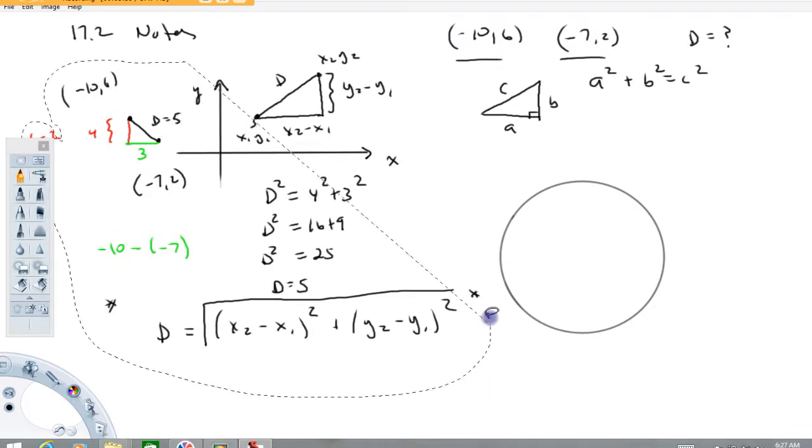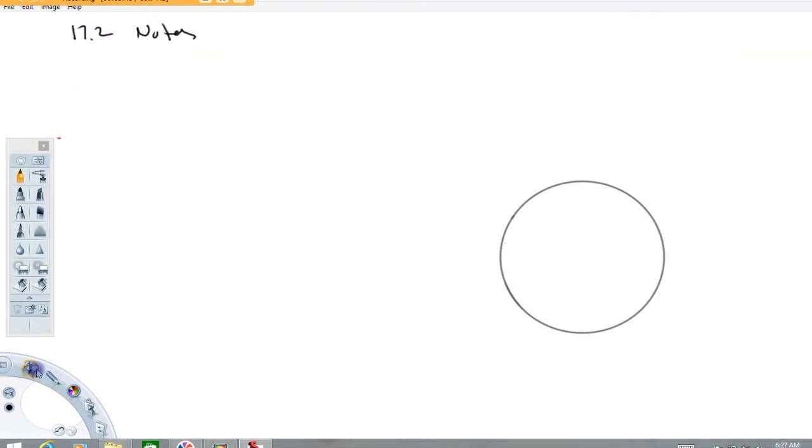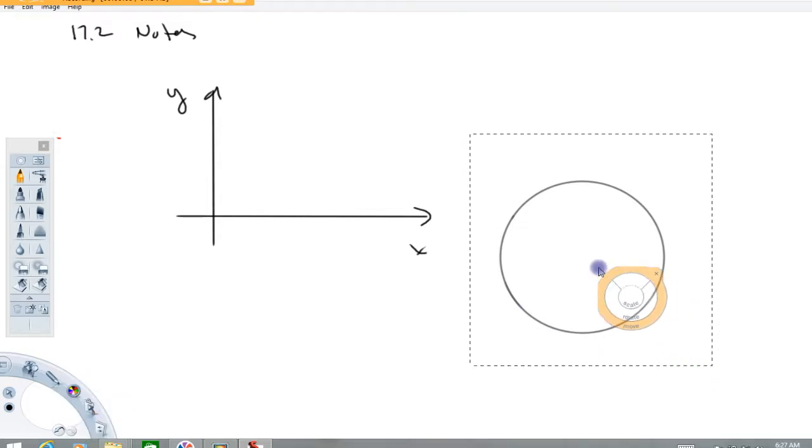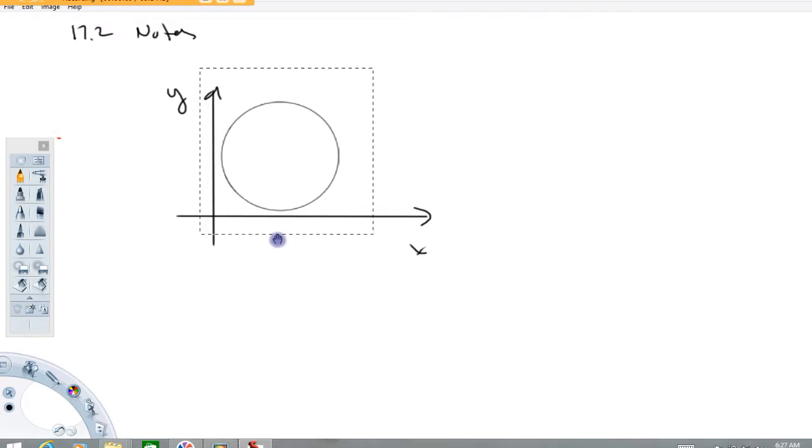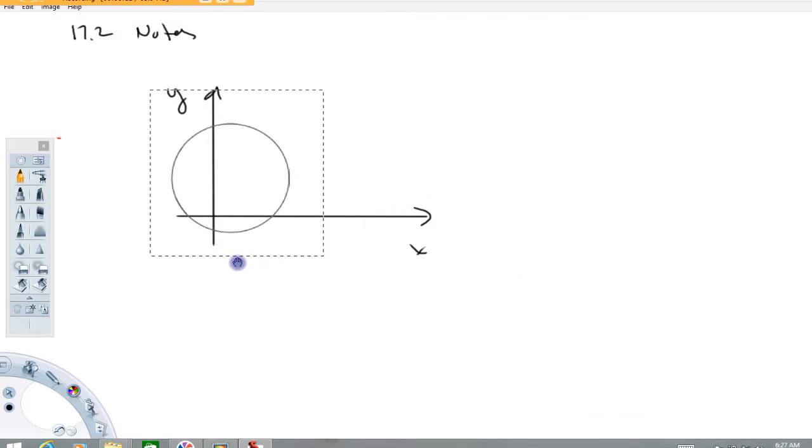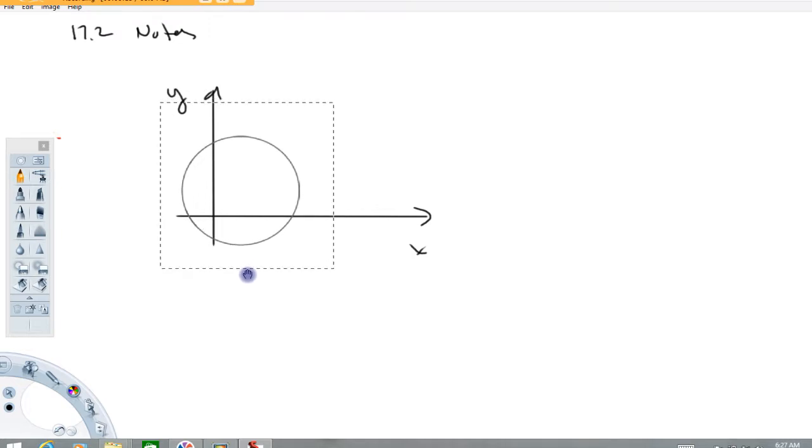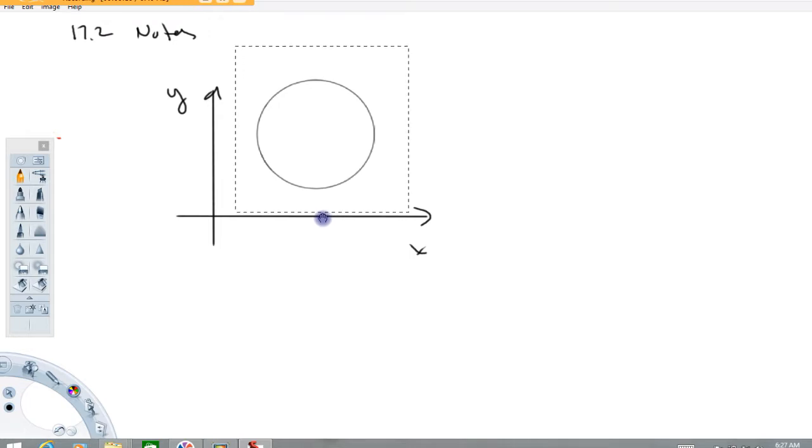Now we'll talk about this circle. The next part of the notes is about circles. I'm going to put a generic coordinate system on this page here. I'm going to take this circle and put it here somewhere in the picture, in quadrant one.